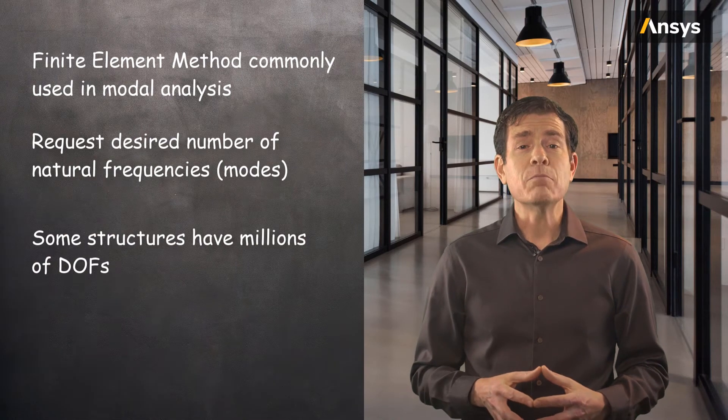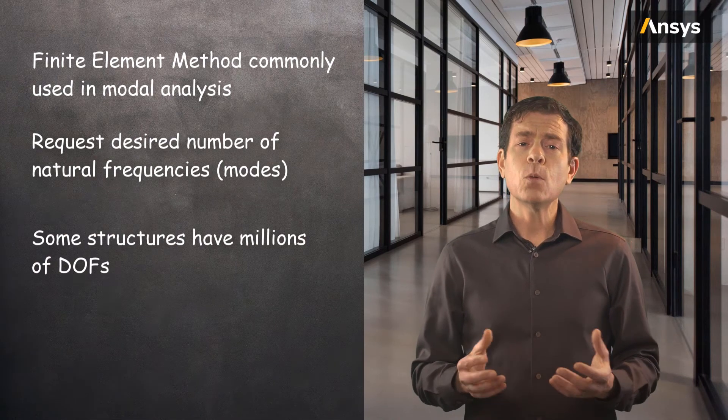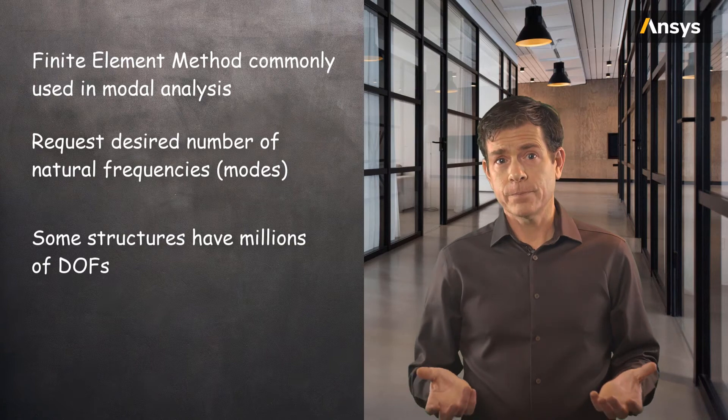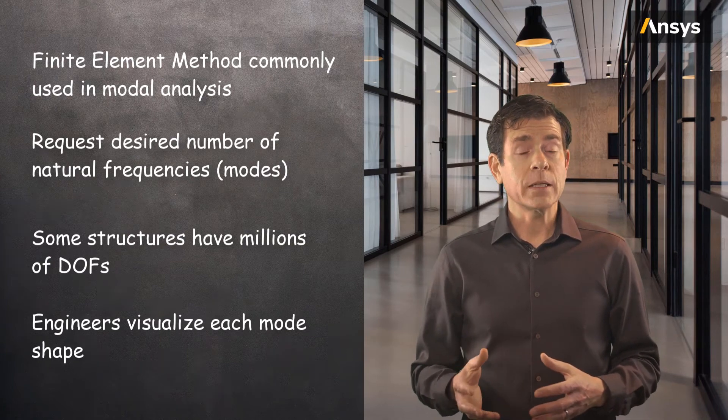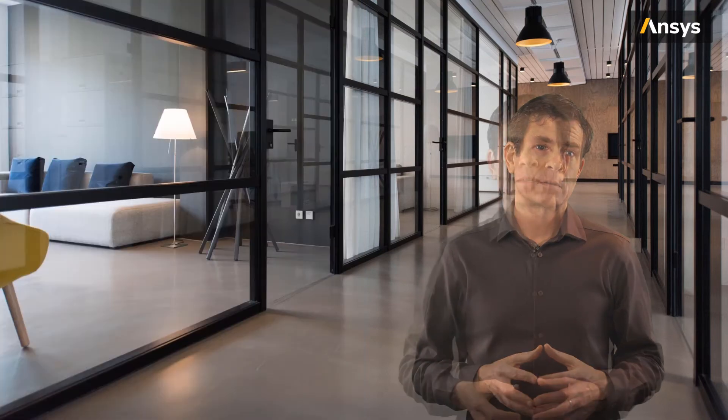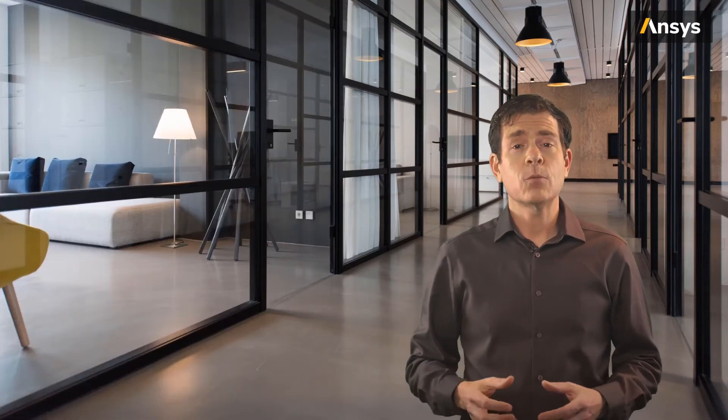Some structures may have millions of degrees of freedom, and we won't typically be concerned with all of them. Engineers can then also visualize the mode shapes corresponding to each natural frequency. As an example of something more complex, let's have a quick look at the wind turbine blade.